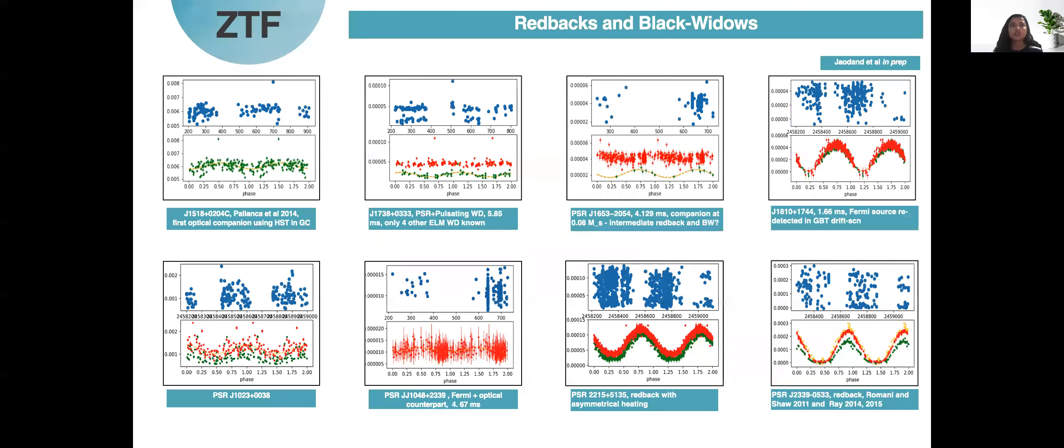The proof of this concept lies in going after currently known redbacks and black widows which is what we did recently and we could recover them using ZTF data. In each of this panel the top plot shows long-term ZTF light curve and the bottom panel shows ZTF light curve folded at the known orbital periods of these redbacks or black widow type of pulsar binaries.